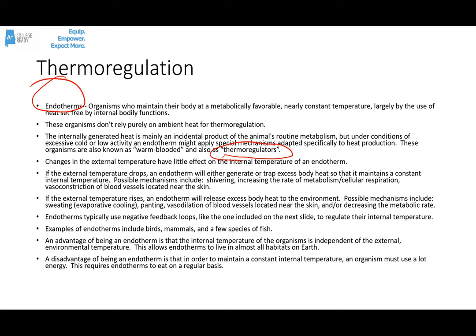If the external temperature rises, an endotherm will do something to release body heat to the environment. Some possible mechanisms include sweating, which leads to evaporative cooling, panting like a dog would do, vasodilation of blood vessels located near the skin — widening those blood vessels — letting more blood flow near the skin and letting more heat out of the body that way, or decreasing the metabolic rate.